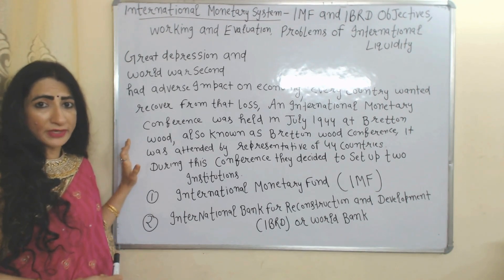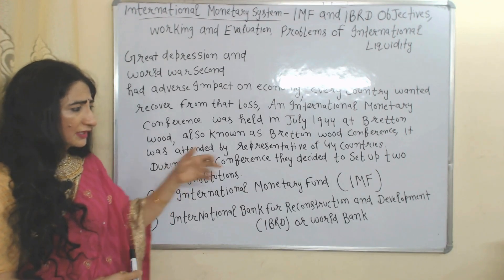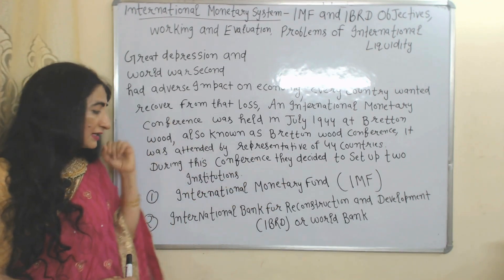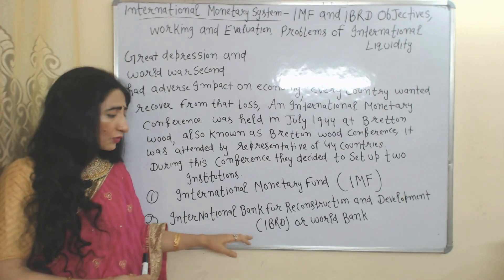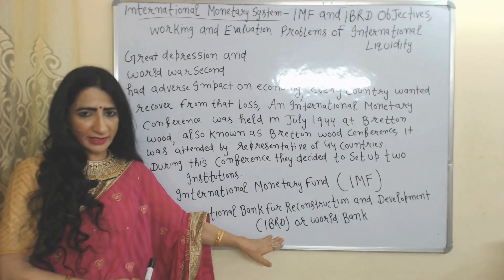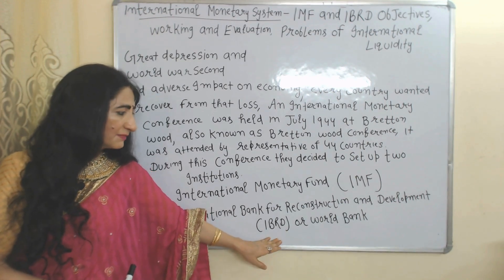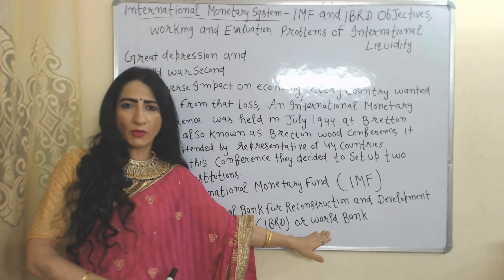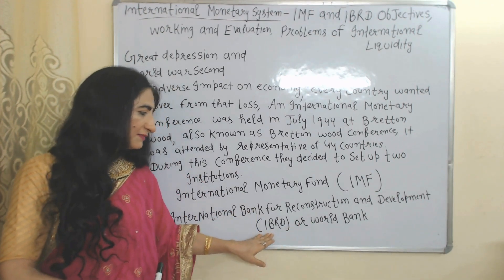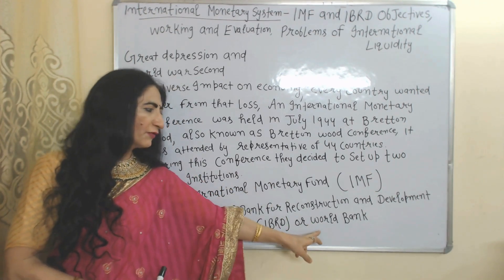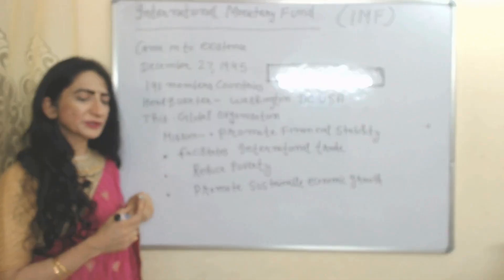During this conference, they decided to set up two institutions. First is the International Monetary Fund, or IMF. Second is the International Bank for Reconstruction and Development, or IBRD. One important thing: IBRD and World Bank are the same — IBRD is the official name of the World Bank, so don't be confused.